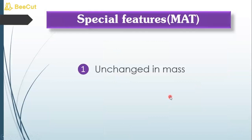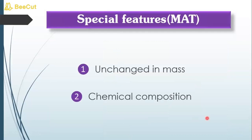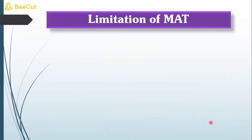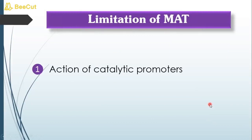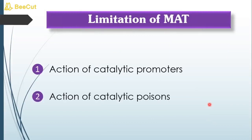The uniqueness of modern adsorption theory is that it can nicely explain why the mass of the catalyst remains unchanged and why the chemical composition of the catalyst does not change. However, the only limitation of modern adsorption theory is that it cannot explain the action of catalytic promoters and cannot explain the action of catalytic poisons.